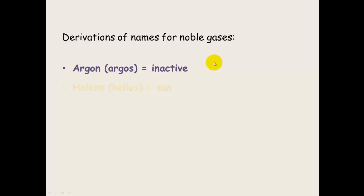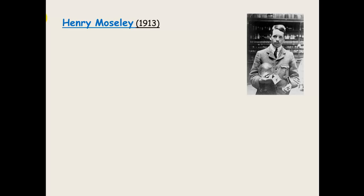Some of the names for the noble gases come from words. For instance, helium comes from helios meaning sun. Neon, neos meaning new. Krypton, hidden and xenon, stranger. And argon of course meaning inactive.